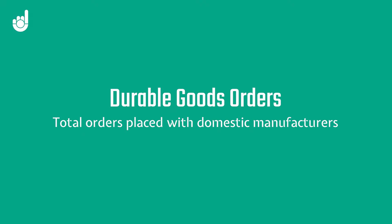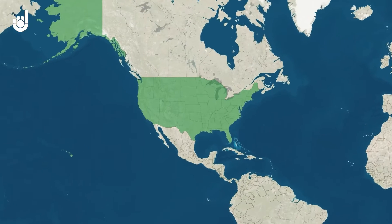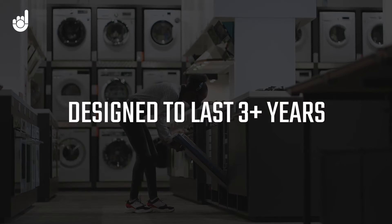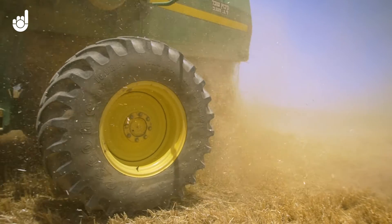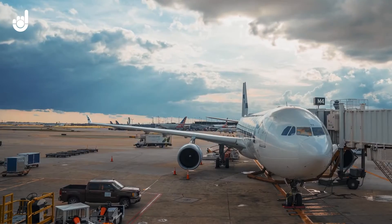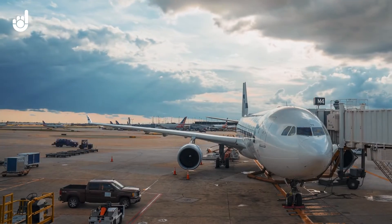Durable Goods Orders in the US is released by the US Census Bureau and it measures the total value of new orders placed with domestic manufacturers, so those that are based in the US. The data release only covers durable goods, which are goods that are designed to last for three or more years, so this includes things like machinery, computers, even planes and things like that.